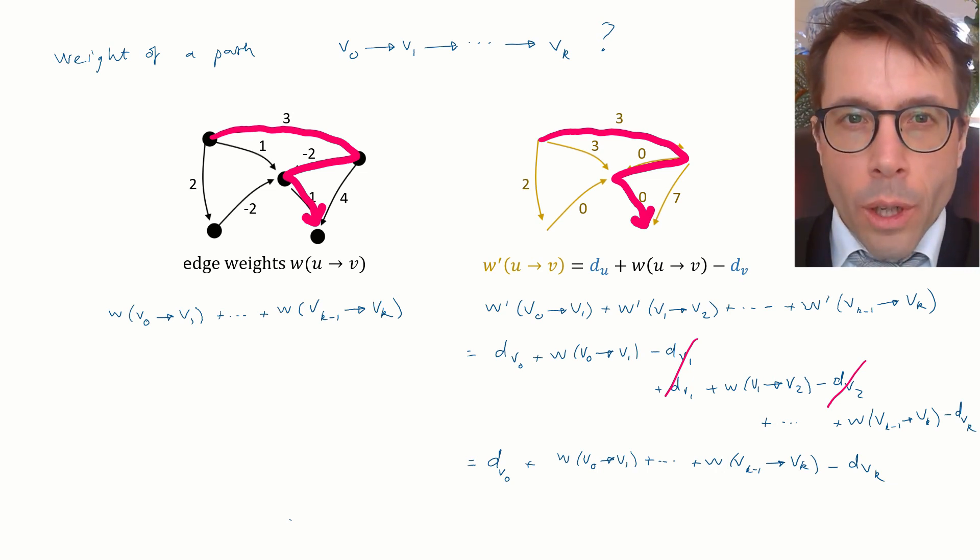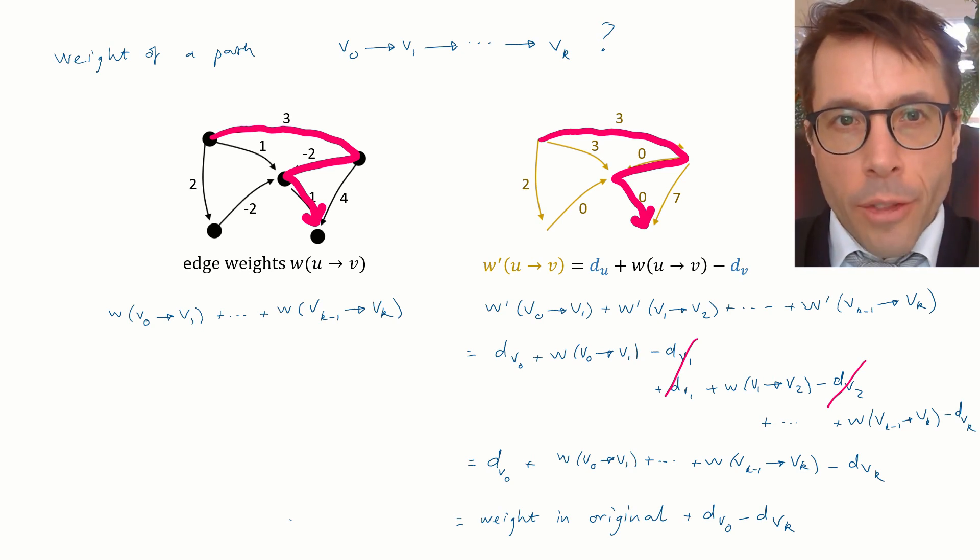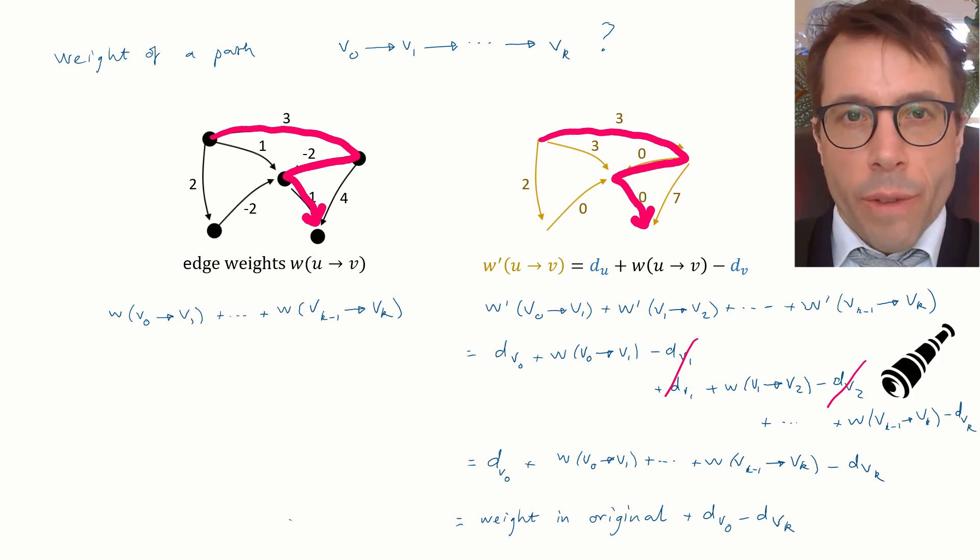So what we've shown is that the weight of a path in the helper graph is equal to the weight in the original graph plus a correction term. And this correction term depends only on the start and end vertices, not on the rest of the path. By the way, this sort of algebraic trick where lots of intermediate terms all cancel each other out, this is called a telescoping sum, and I always find it so satisfying.